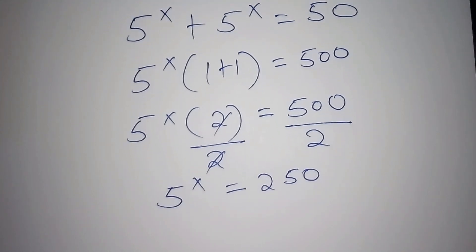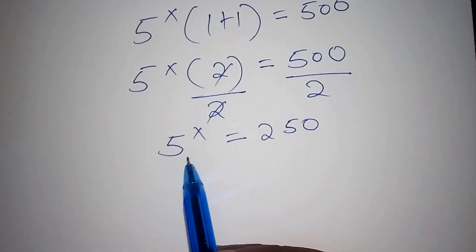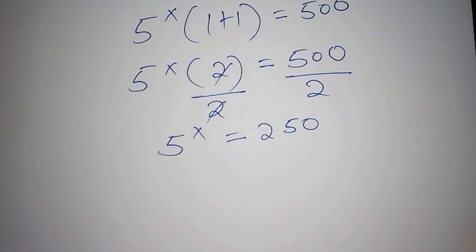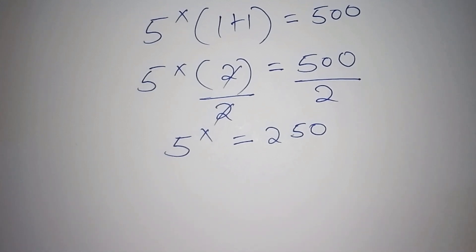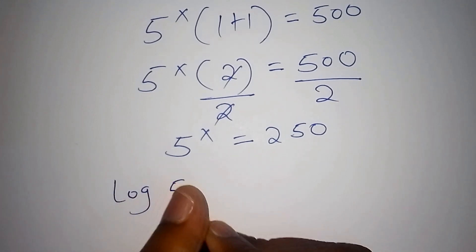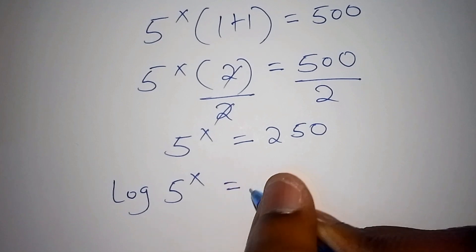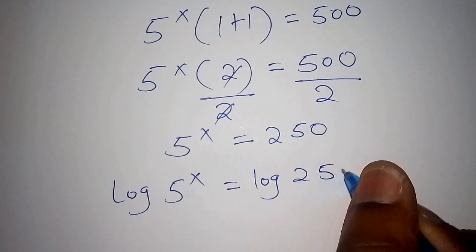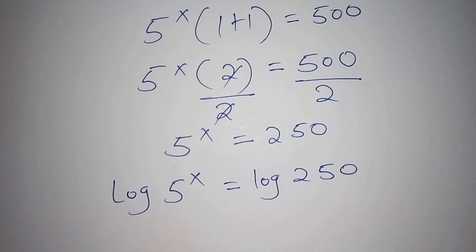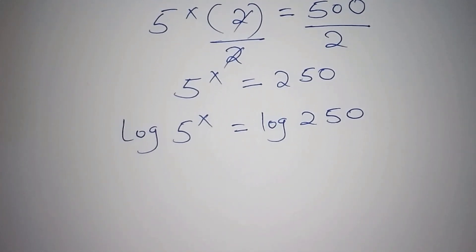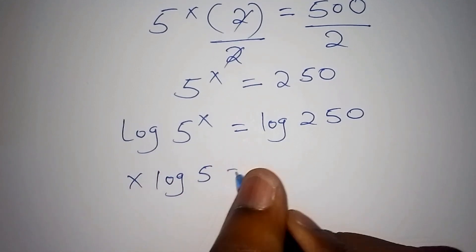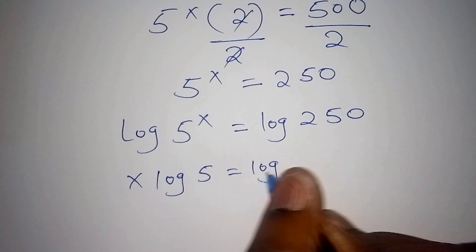From there, we want to express 250 to the base of 5, which is impossible directly. So in order to do that, we shall use what is called the logarithm. We introduce the log: log of 5 to the power of x equals log of 250. The log of 5 to the power of x can also be written as x log 5 equals log of 250.